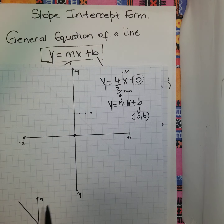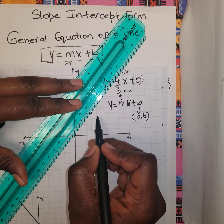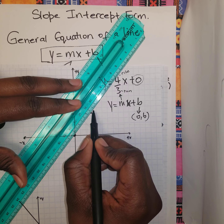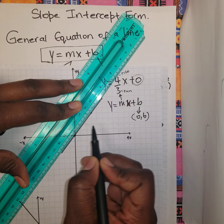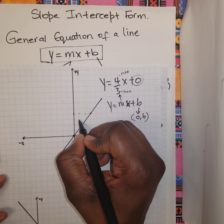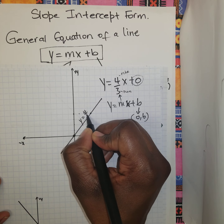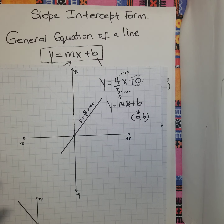You connect the points to form your line. This is your line: y equals 4 over 3 x plus 0, or just 4 over 3 x. And that's how we do it.